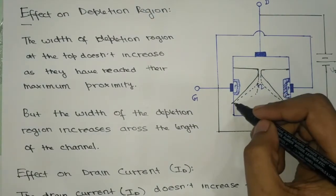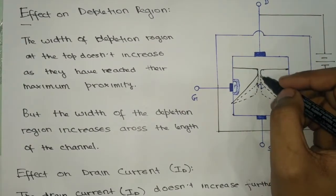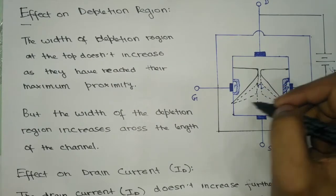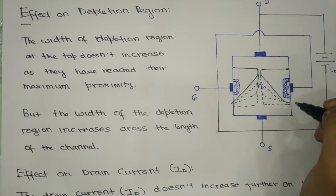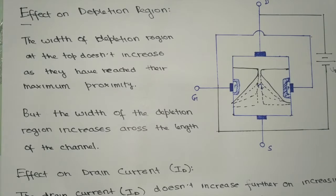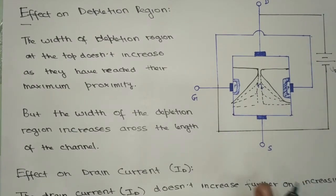Along the length of the N-channel, as we keep increasing the VDS value, the depletion region increases until the distance between both depletion regions becomes constant throughout the region. On increasing VDS further, the depletion region enters a breakdown state and electrons flow at a much faster rate. This is the effect of increasing the voltage from drain to source beyond the pinch-off voltage.